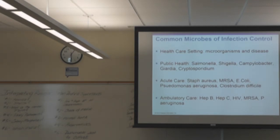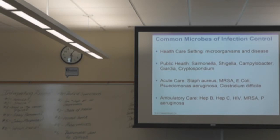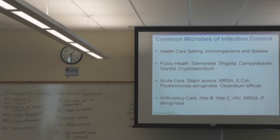Common microbes in infection control: in public health settings like daycare centers, schools, and prisons, the most common culprits are Salmonella, Shigella, and Giardia. In acute care, Staph aureus and MRSA are big ones, as well as E. coli, Pseudomonas, and Clostridium difficile — we call that Code Brown — which comes from broad-spectrum antibiotic overuse killing off normal flora. In ambulatory care, you're looking at hepatitis, HIV, MRSA, and Pseudomonas aeruginosa.